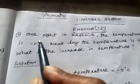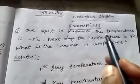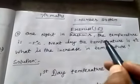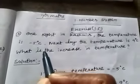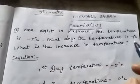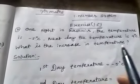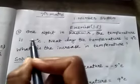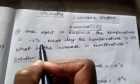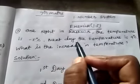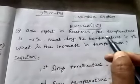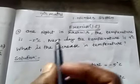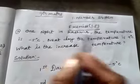First question. One night in Srinagar the temperature is minus 5 degrees Celsius. The next day the temperature is 9 degrees Celsius. So what is the increase in temperature? We find the increase by finding the difference.